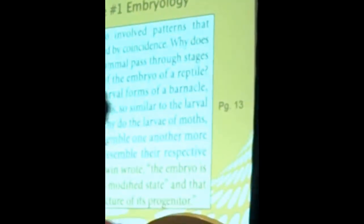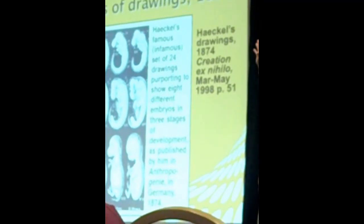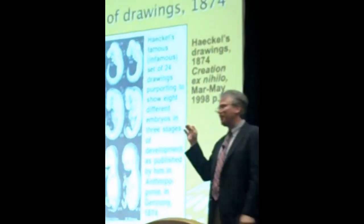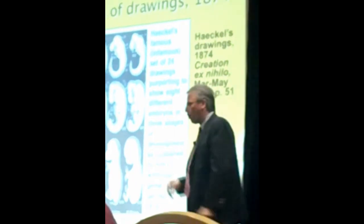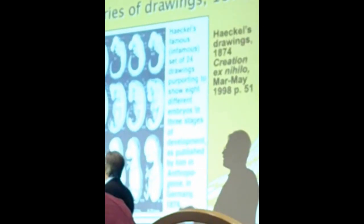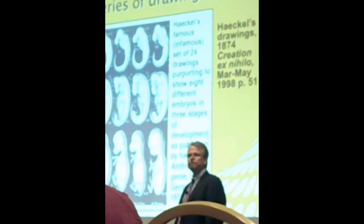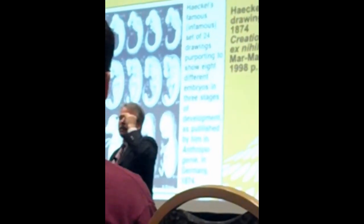Was Darwin wrong? The first piece of evidence they give is embryology. How many of you have ever seen images like this in a textbook? These were actually drawn by a guy by the name of Ernst Haeckel, done back in the 1800s. In the lower corner you can see a fish, a salamander, a turtle, a chicken, a pig, a couple of mammals, and a human at three different stages of embryological development.